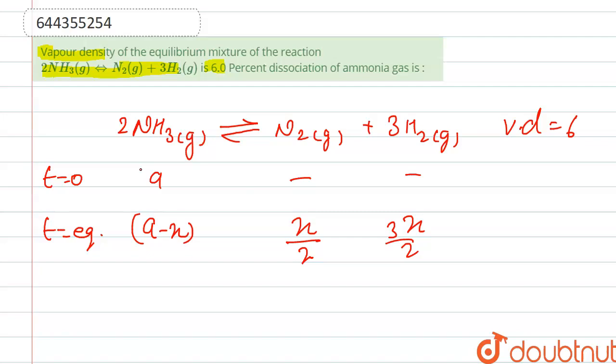From here, vapor density is given, so we calculate the molecular weight. We know that vapor density equals molecular weight divided by 2, so molecular weight of mixture equals 6 times 2, which is 12.